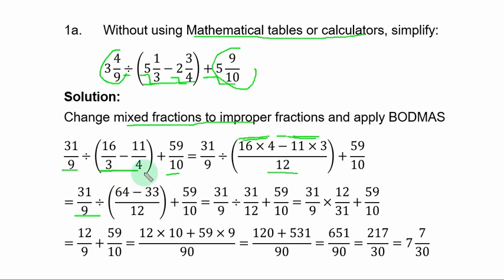By the time the bracket is simplified by subtraction, you have 31 over 12. So the bracket is gone and you have 31 over 9 divided by 31 over 12 plus 59 over 10. The next operation is division and when you are dividing fraction, the division sign changes to multiplication and the fraction at the right of the sign is inverted.